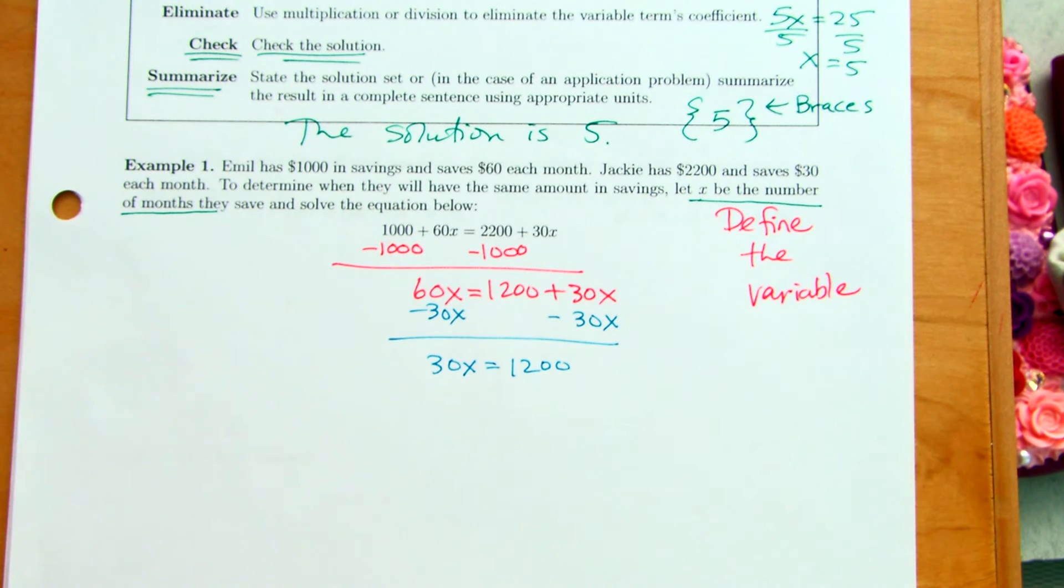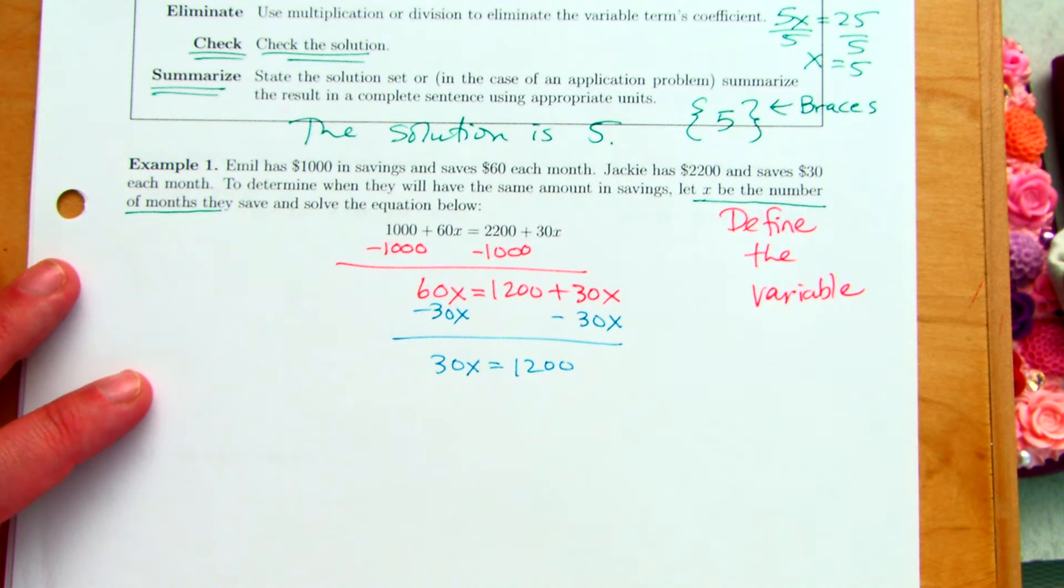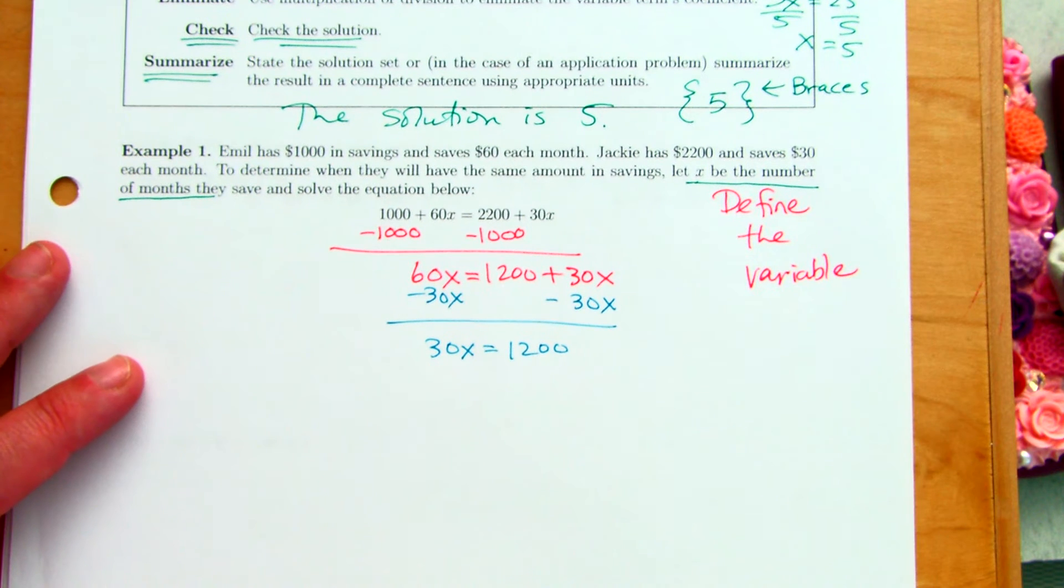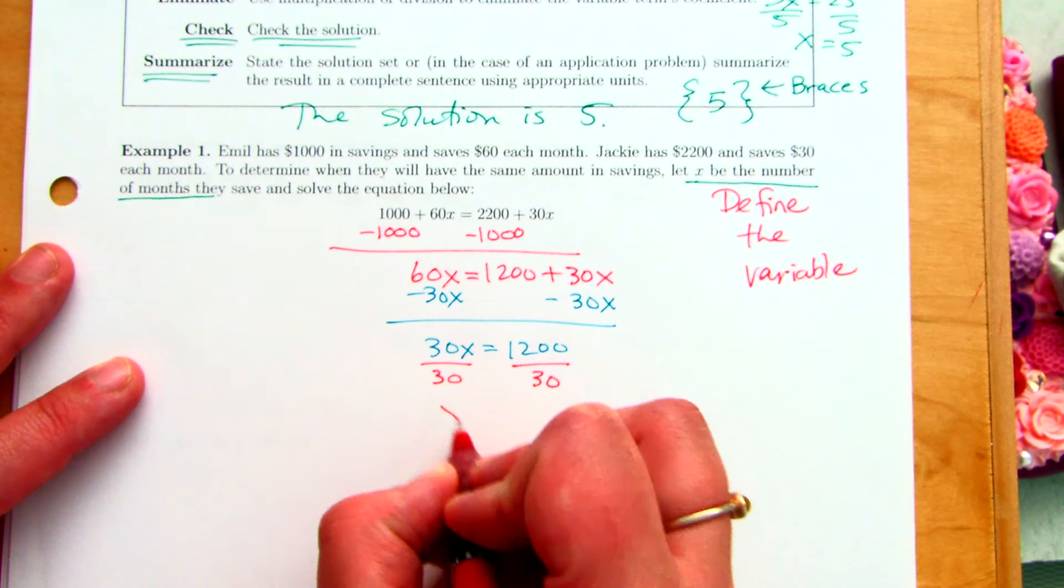And we get 30X equals 1,200. And that's the difference in how much they started out with. And this is the difference in how much they're saving per month, right? And now, what would we want to do to get X by itself? Divide by 30.